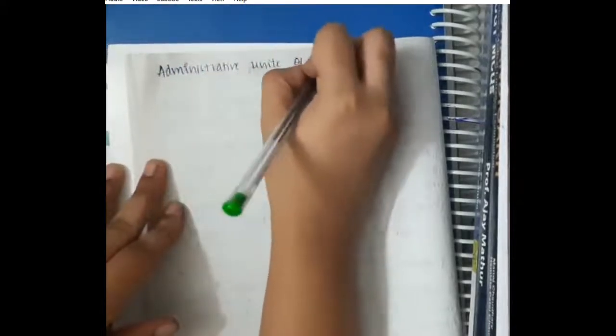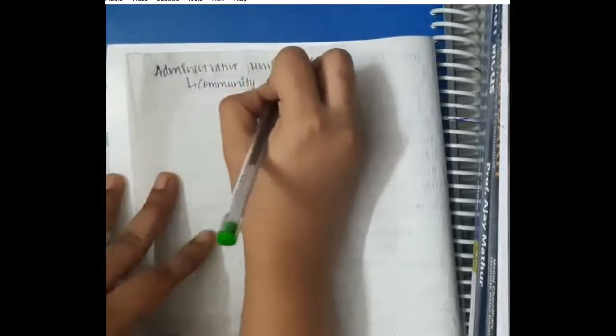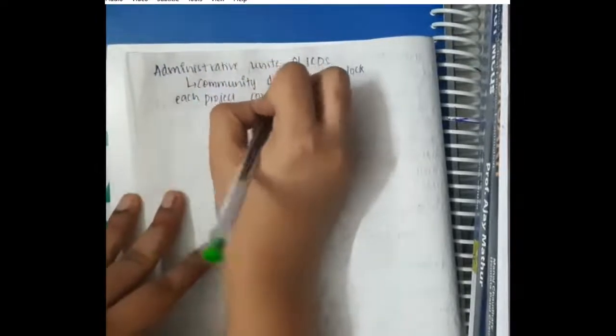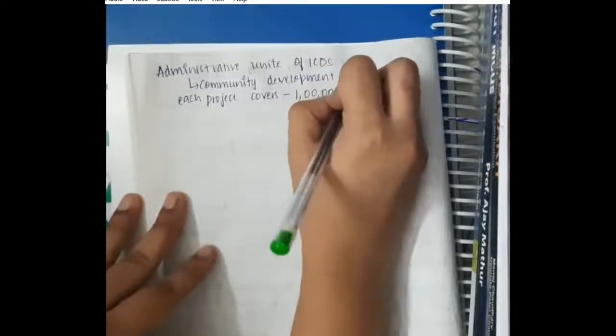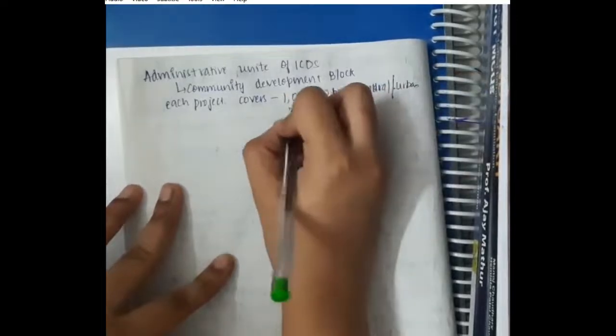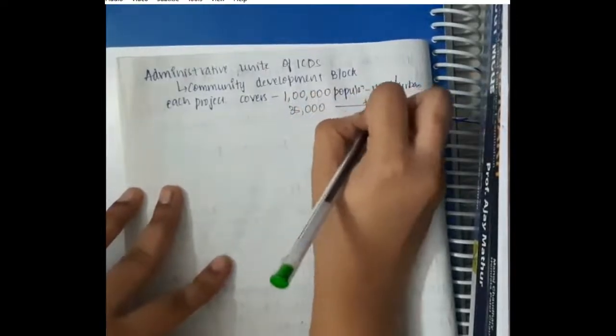The administrative unit of ICDS includes the community development block. One community development block project covers 1 lakh population in rural or urban areas and 35,000 population in tribal areas. The community development block is in charge of a Community Development Project Officer.